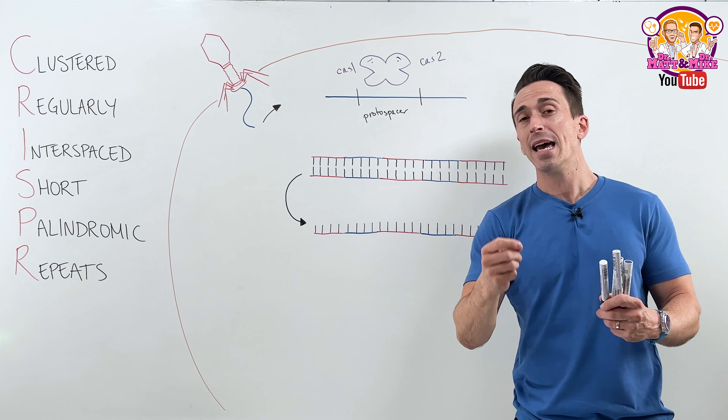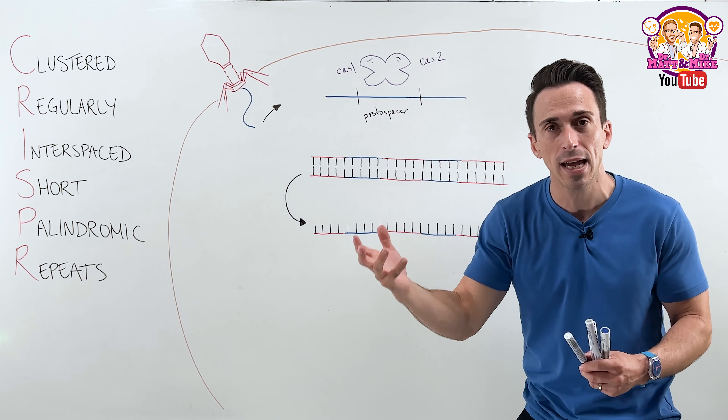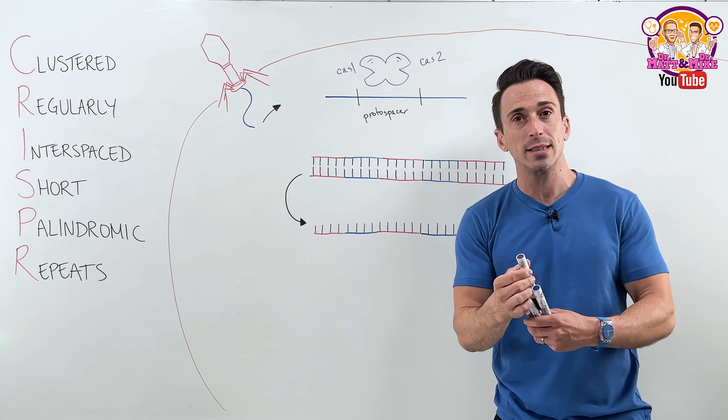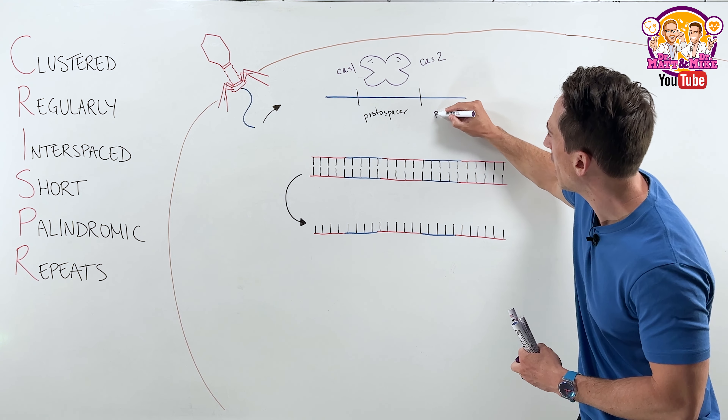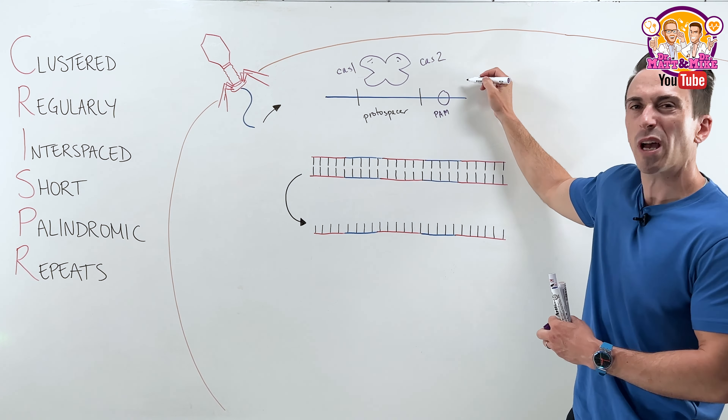It chops at specific areas by identifying a sequence or motif of DNA on the virus called a proto-spacer adjacent motif, also known as a PAM. Once it identifies this PAM region it will cut a few base pairs upstream of it, creating this proto-spacer, which it then takes and incorporates into the bacterial genome. Once incorporated into the bacterial genome it is now called a spacer.